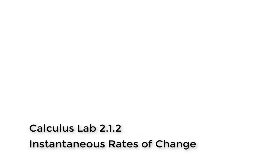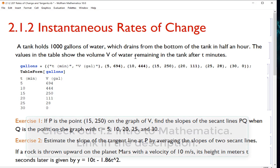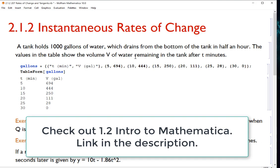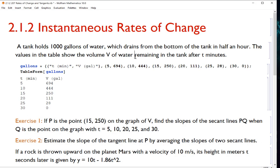Today we're going to use Mathematica to estimate the instantaneous rates of change, looking at particular values for the average rate of change, and this is in particular for some sort of physical situation. This is lab 2.1.2 instantaneous rates of change for our calculus Mathematica manual, and if you haven't looked at the introductory lab that's an introduction to Mathematica, I recommend going over that. It'll make a lot more sense and how we're approaching these problems.